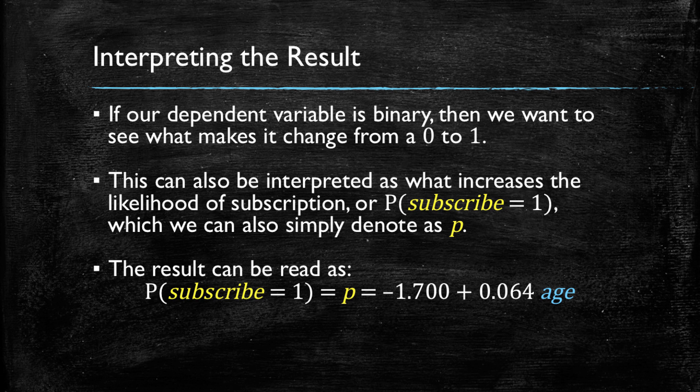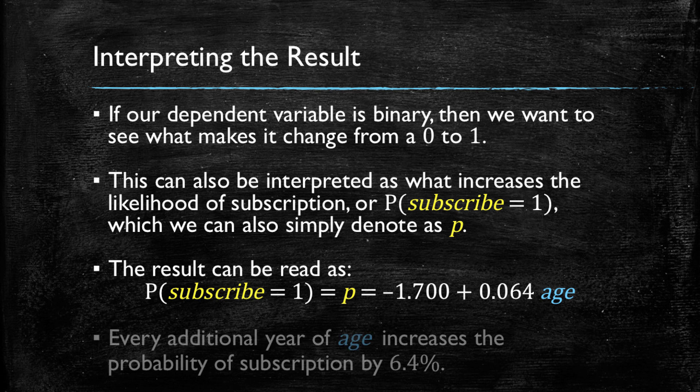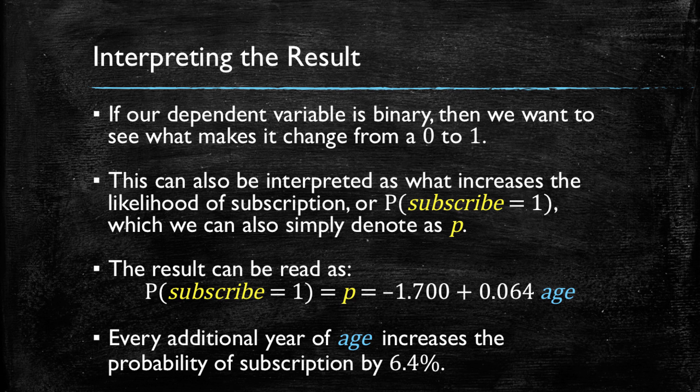So since this is the slope of our model, we can simply take the coefficient of age and make the following assertion. Every additional year of age increases the probability of subscription by 6.4%. And this makes a lot of sense.